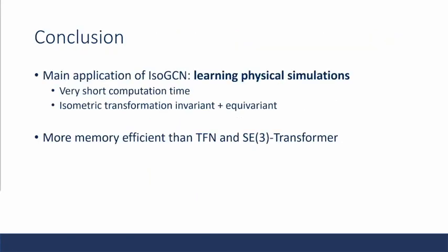So in conclusion, the main application of ISO-GCN is that it is capable of learning physical simulations. There's very short computational time and it's very efficient as the authors have shown. And they do so in an isometric transformation invariant and equivariant manner as they've proven through their propositions. So the main pitch is that this is a new type of doing isometric transformation invariance and equivariant models, but while being significantly more memory efficient than TFNs and SE3 transformers.